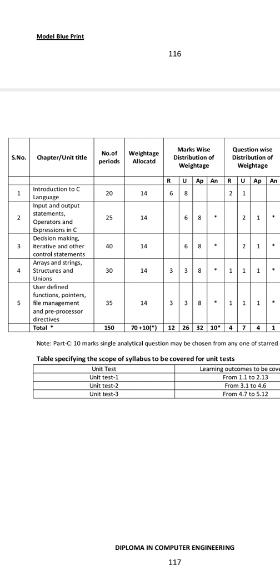Every lesson has one essay question and two short answer questions. There are 10 marks per chapter. That means chapters 2, 3, 4, and 5 each follow this pattern — 3rd chapter, 5th chapter, 2nd chapter, 4th chapter. The first chapter is slightly different. You can follow the same pattern overall.